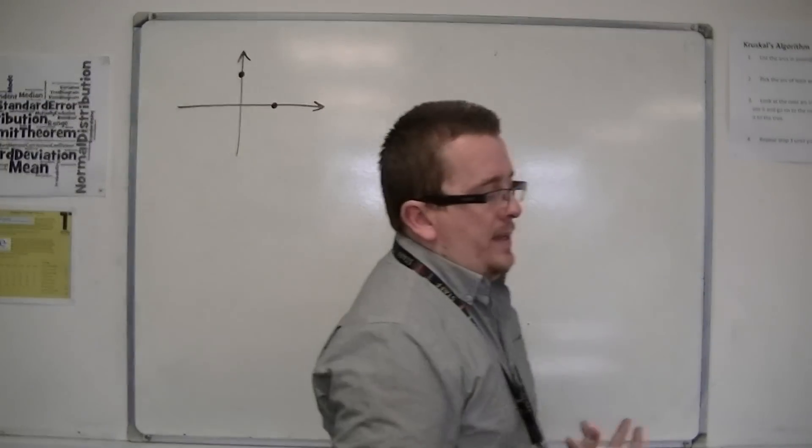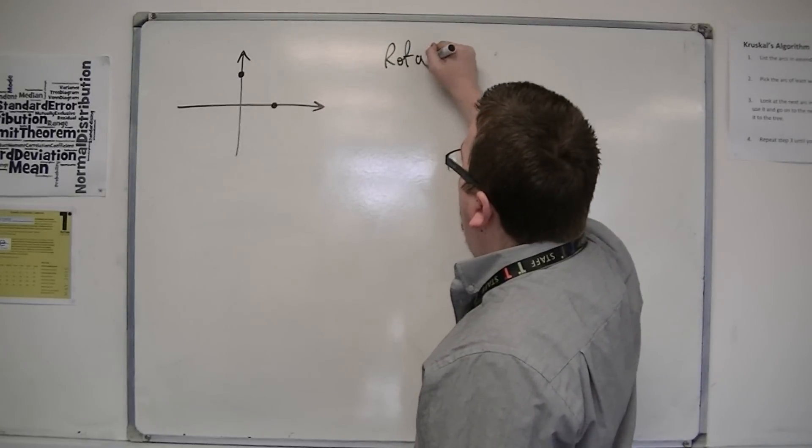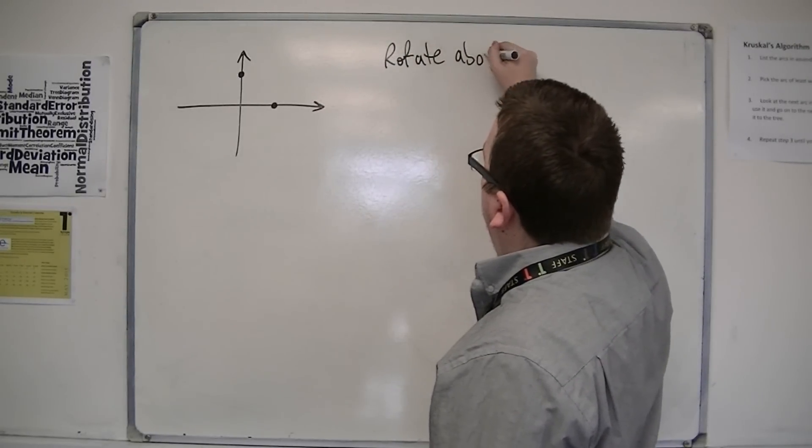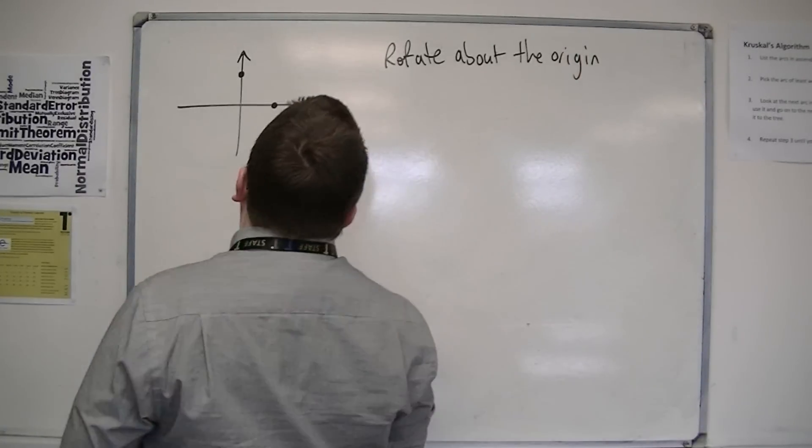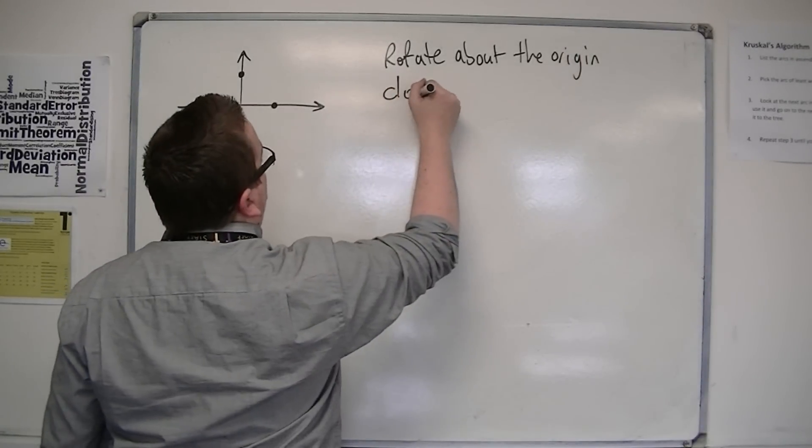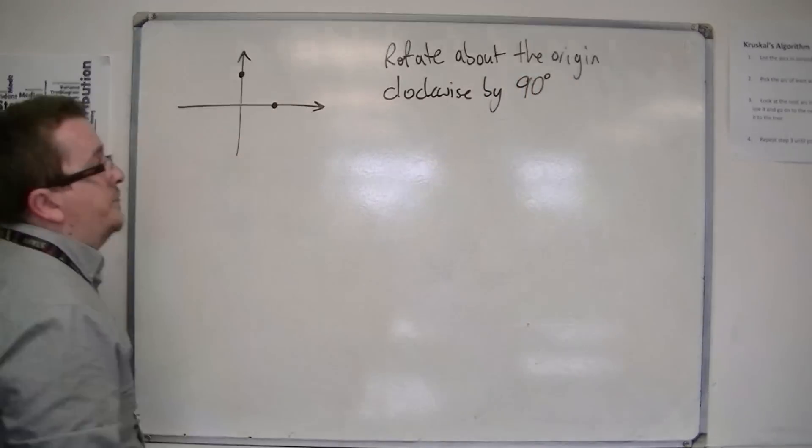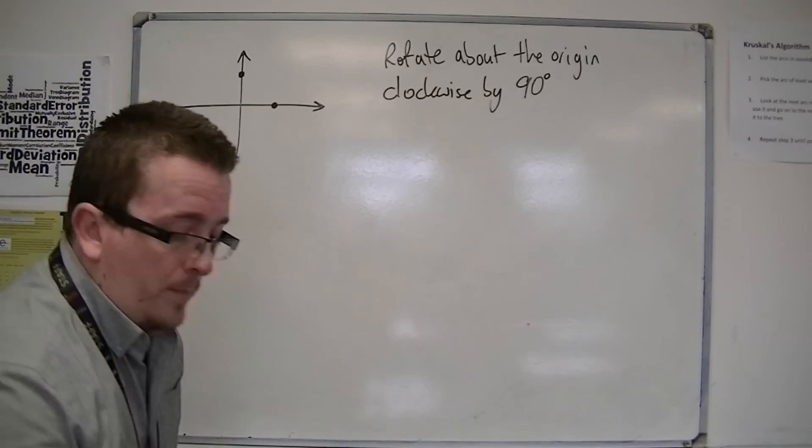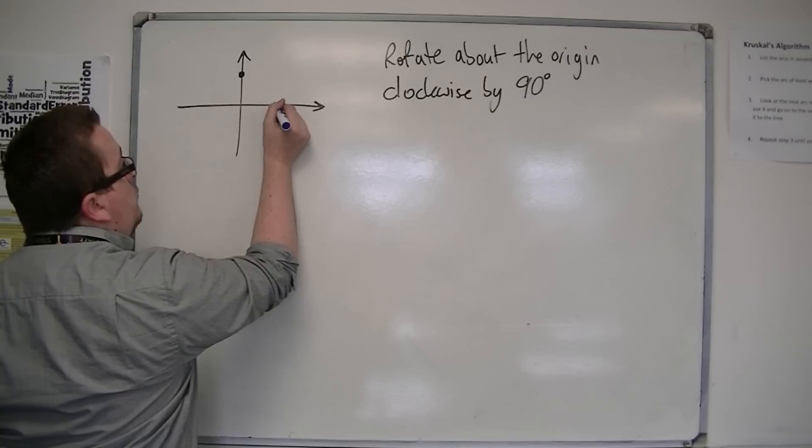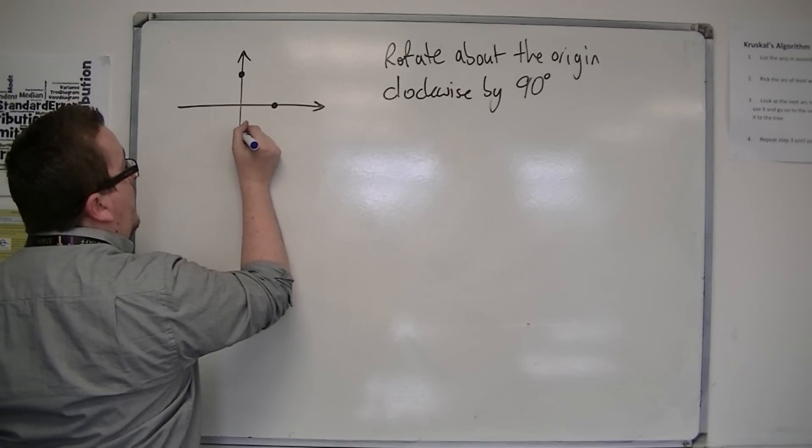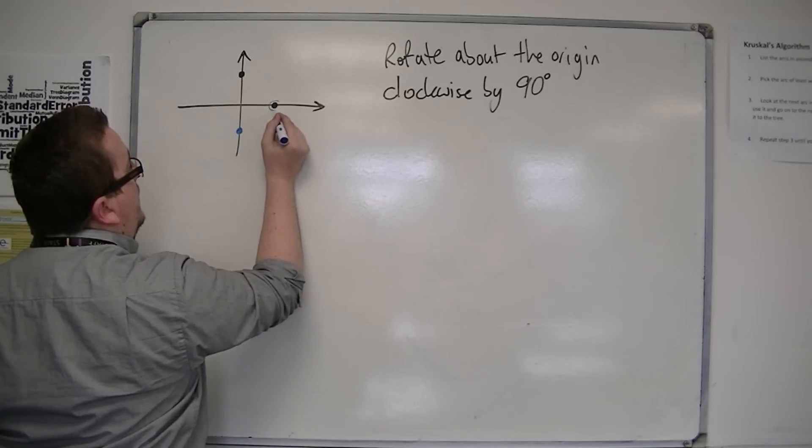let's say I want to rotate about the origin, clockwise by 90 degrees. Then what's going to happen is this point, one zero, will get rotated round so it is now down here, and this point will get rotated round so it is now there.